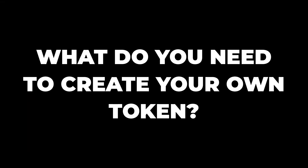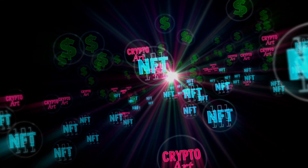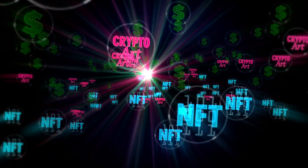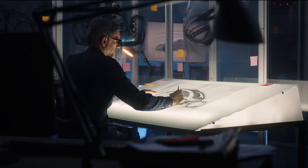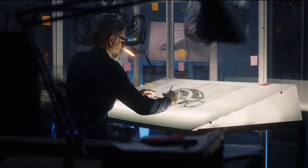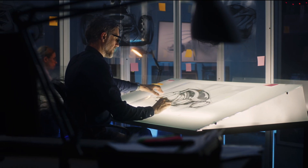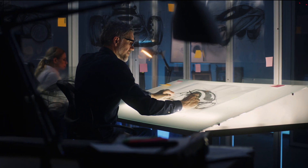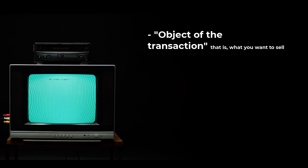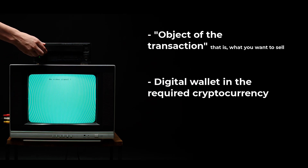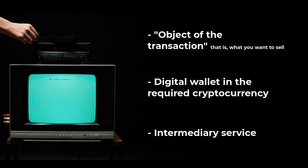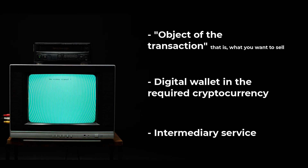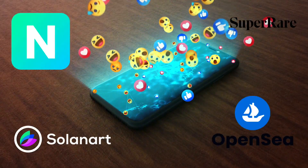What do you need to create your token? The concept is quite handy for all parties in the transaction. Various enthusiasts and artists can sell their artworks online without middlemen, and blockchain platforms earn money from transactions while users earn money by reselling products at a profit. To create and sell your token you need at least three things: an object of the transaction — that is, what you want to sell — a digital wallet, and funds in the required cryptocurrency. Ethereum is the most popular intermediary service.